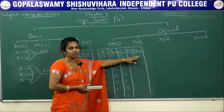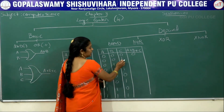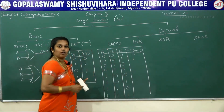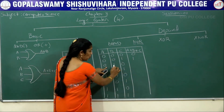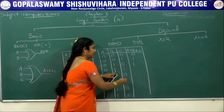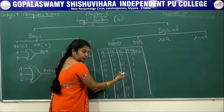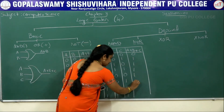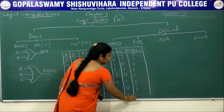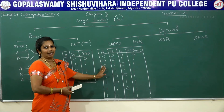In OR gate, if any one of the inputs is true the output becomes true. So 0+0+1=1, 0+1+0=1, 0+1+1=1, 1+0+0=1, 1+0+1=1, 1+1+0=1, and 1+1+1=1. Only when all inputs are 0 does the output become 0. This is the truth table for three variables in OR gate.